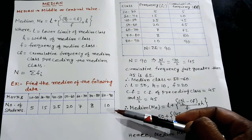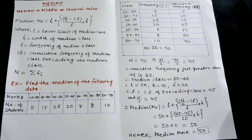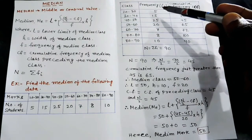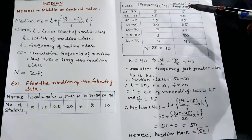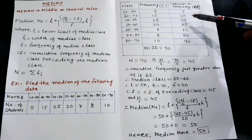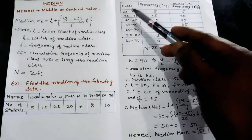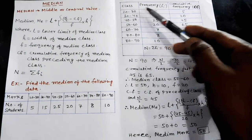Marks 80–90, number of students is 10. Now we will find the cumulative frequency. We find the class interval and cumulative frequency — for example, class interval 20–30 has frequency 5.